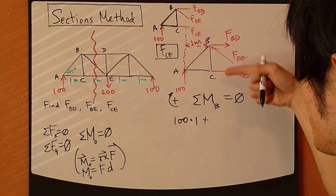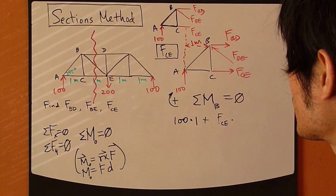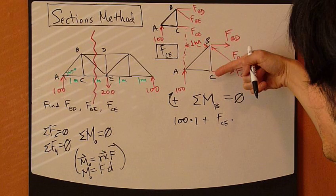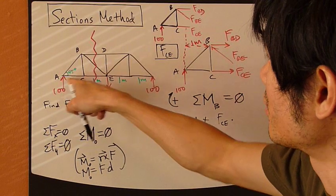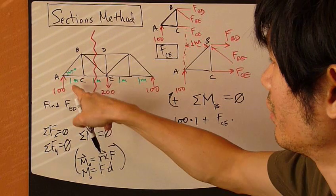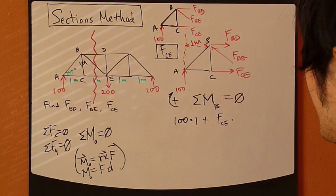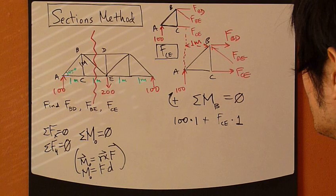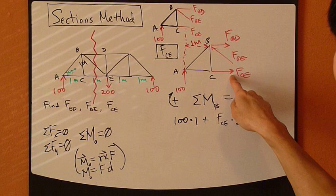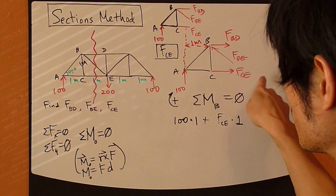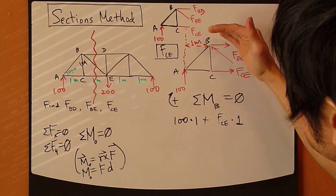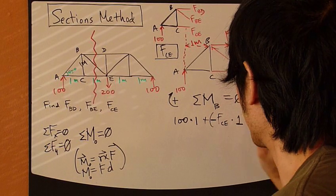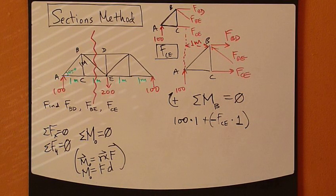FTE times the shortest distance D. The shortest distance is length BC. Knowing that this triangle is a 45-45-90 triangle, one meter means this is one meter tall, so BC is one meter. Positive or negative? Based on the assumed direction, FTE creates a counterclockwise moment, so this term is negative.